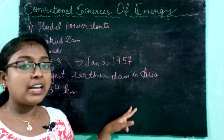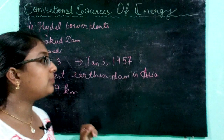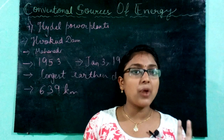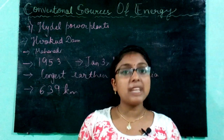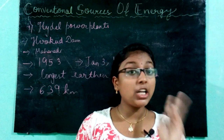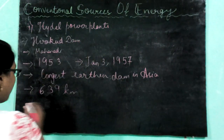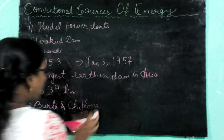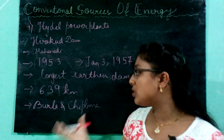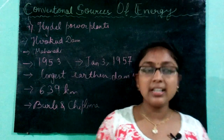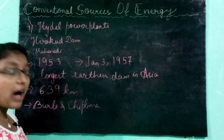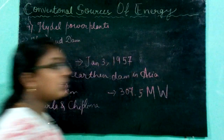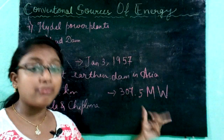The Nehru Minar is at Hirakud, whereas the Gandhi Minar is at Burla. The Hirakud Dam supports two hydel power plants — one at Burla and the other at Chiplima. The capacity of these powerhouses is 307.5 megawatts.